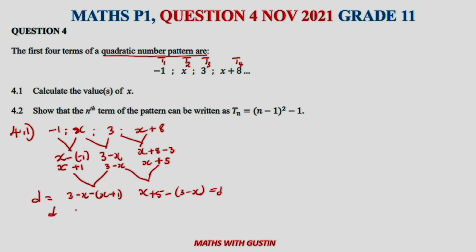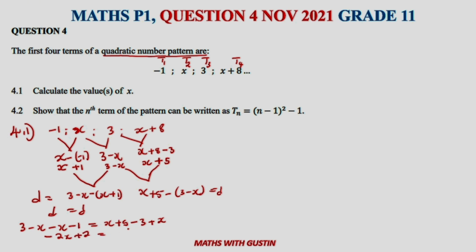In order to find x, we set d equal to d. After removing the brackets, we get: 3 minus x minus x minus 1 equals x plus 5 minus 3 plus x, which simplifies to minus 2x plus 2 equals 2x plus 2.